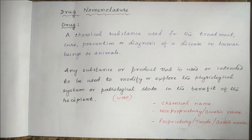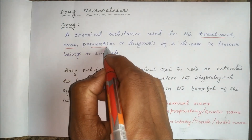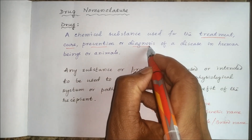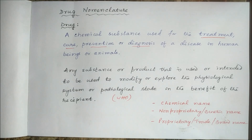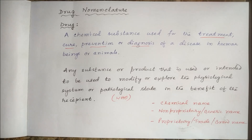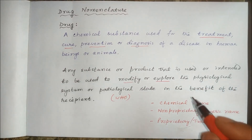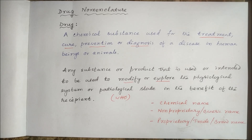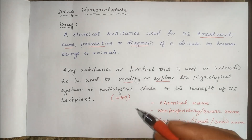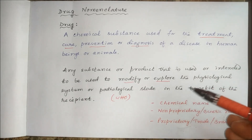Before that, just recall what is a drug. A drug is a chemical substance used for the treatment, cure, prevention or diagnosis of a disease in human beings or animals. Any substance or product that is used or intended to be used to modify or explore the physiological system or pathological state for the benefit of the recipient can be called a drug. This is the WHO definition given for a drug.